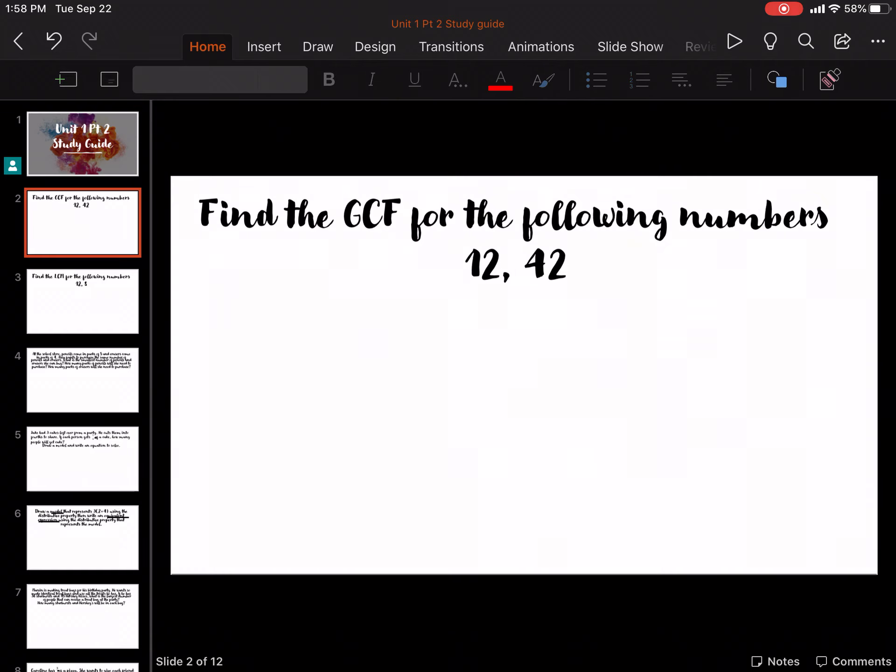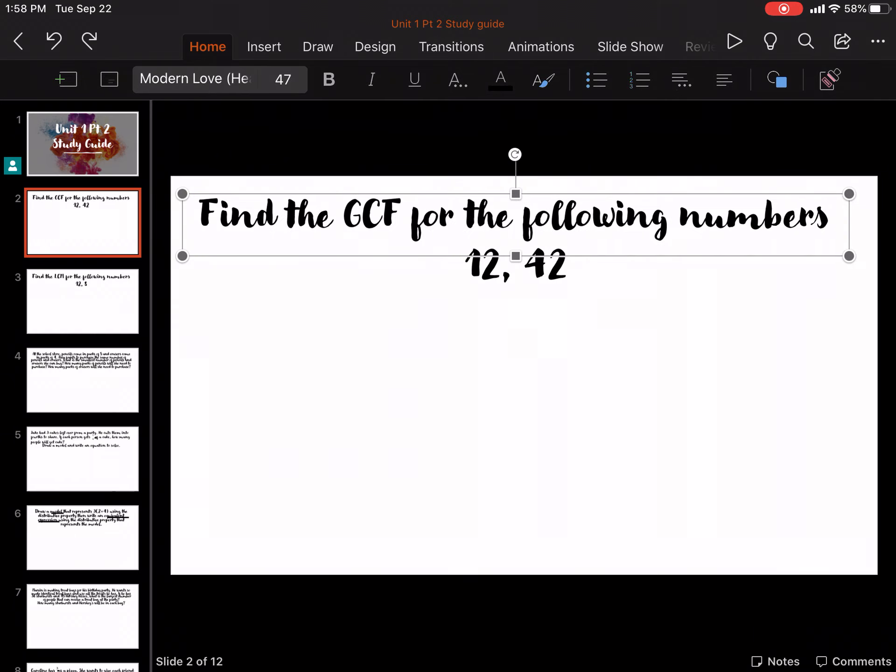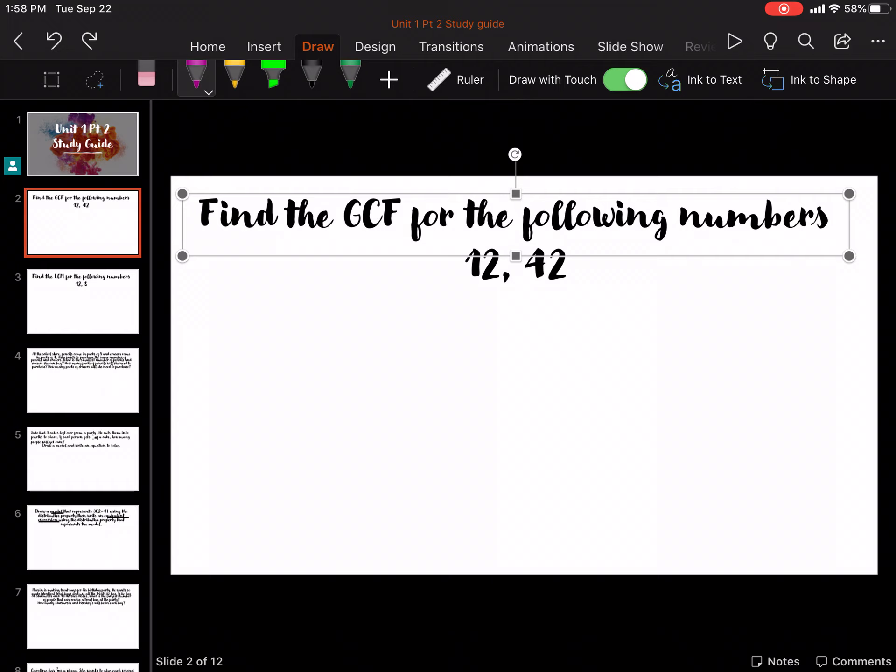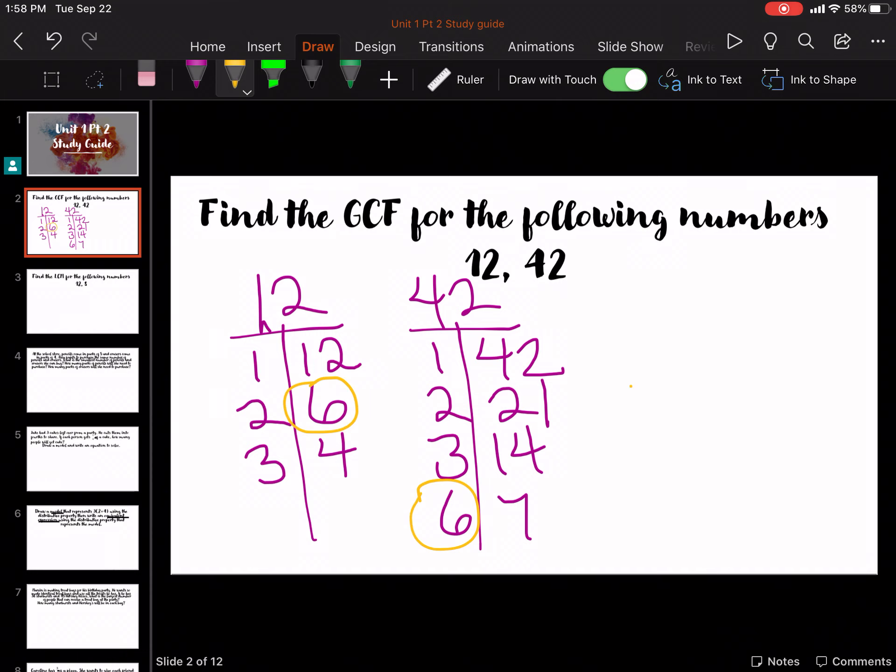We're going to find the GCF, so remember greatest common factor. We're going to find the factors of 12 and 42. So remember it's the numbers that multiply together to get that. So 1 and 12, 2 and 6, 3 and 4. 1 and 42, 2 and 21, 3 and 14, 6 and 7. So 6 is our GCF, is 6.